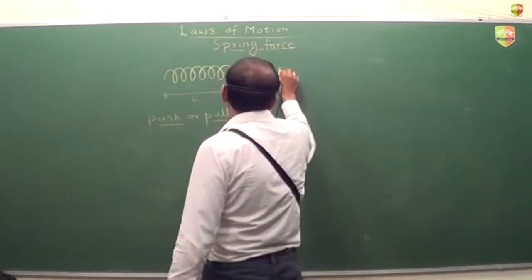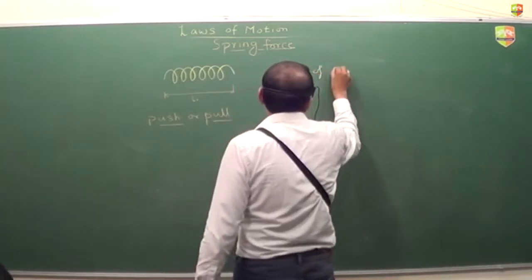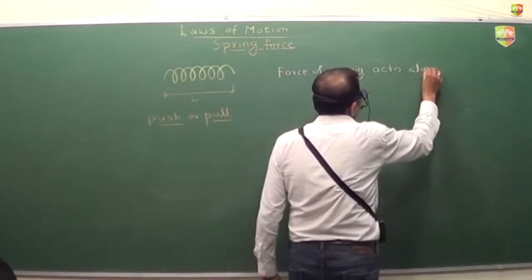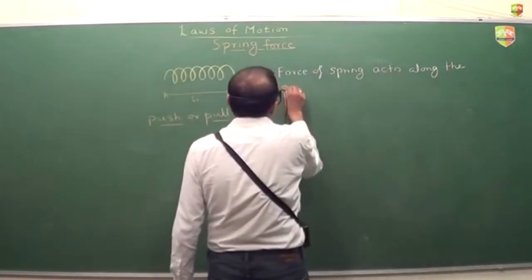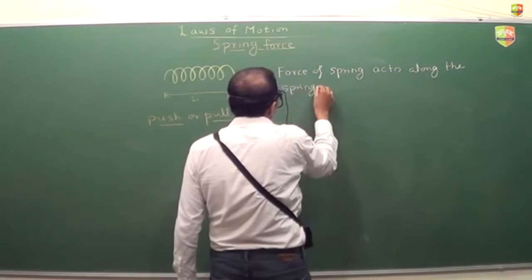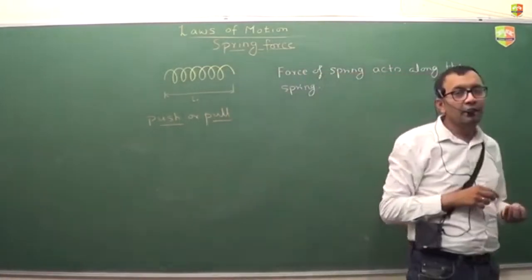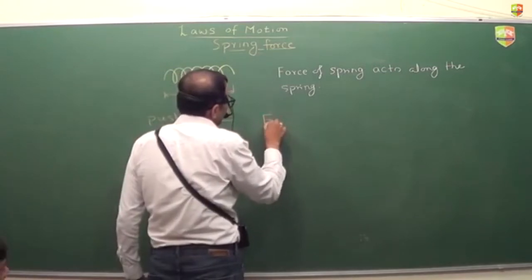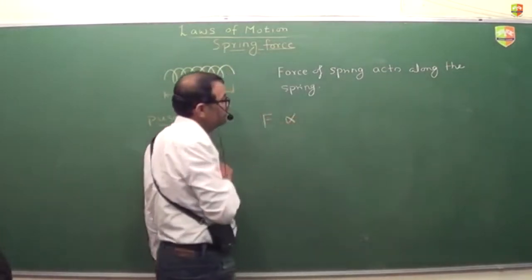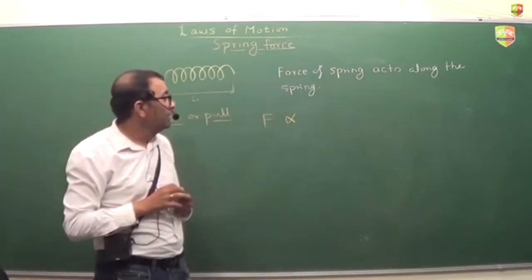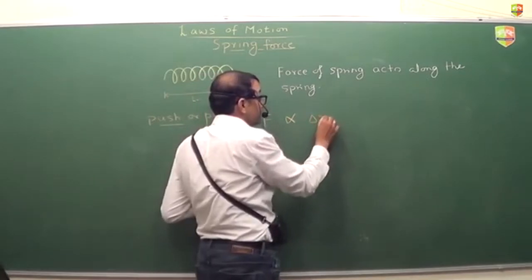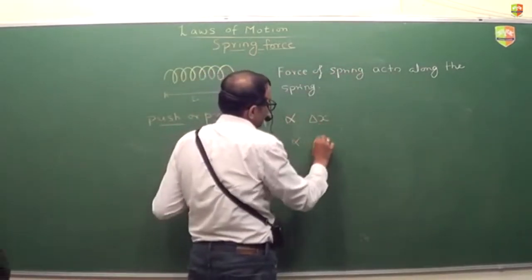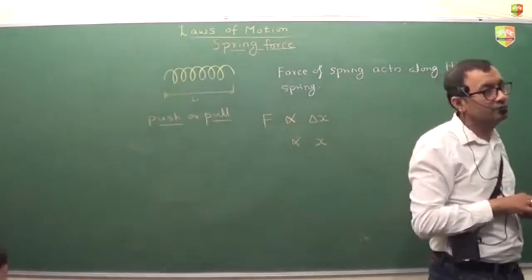The force of the spring acts along the spring. The magnitude of force of the spring is proportional to the change in the length of the spring — delta X. Or if you represent delta X by just X, you can say it is proportional to X, where X represents the change in length of the spring.